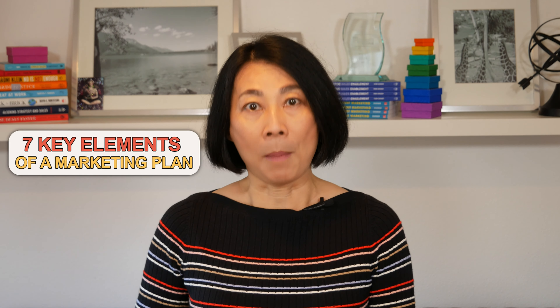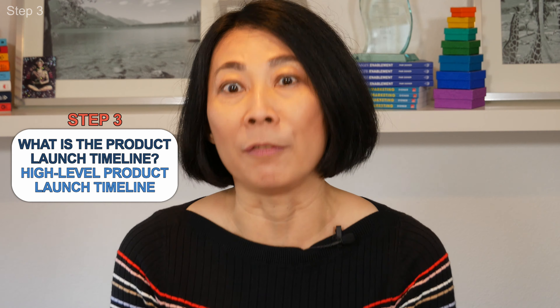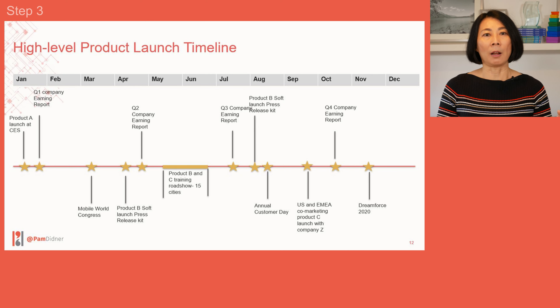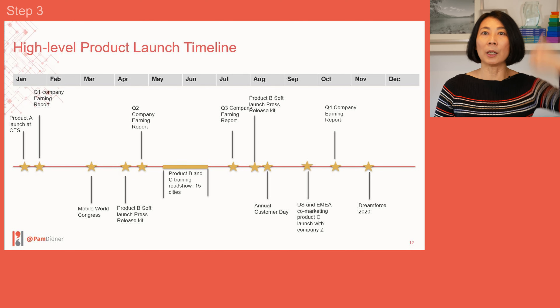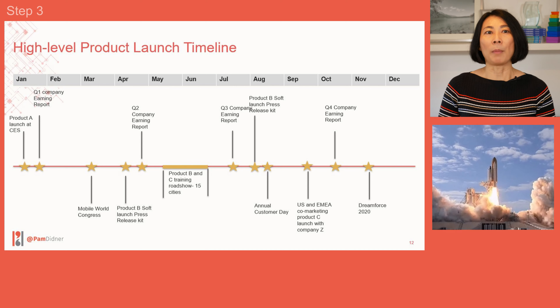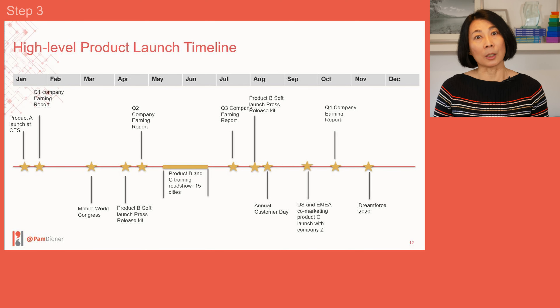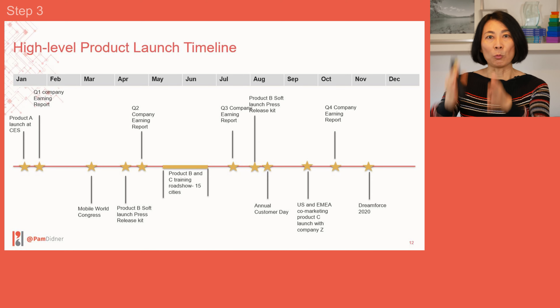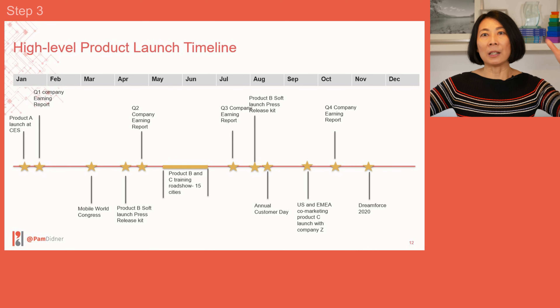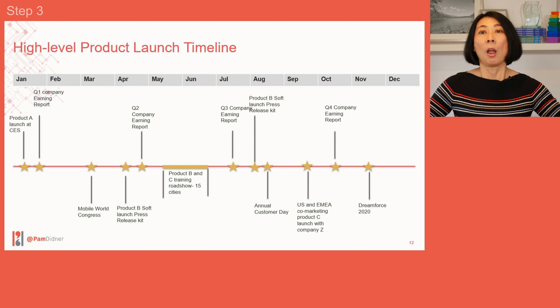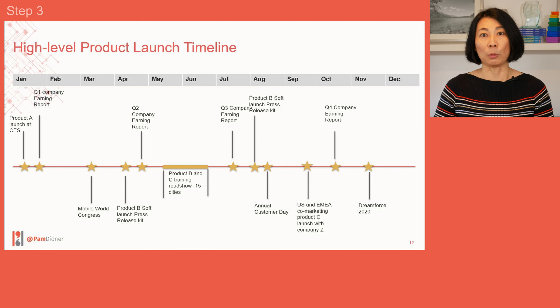Seven key elements of a marketing plan. Number three: do you have any specific product launches or service announcements coming? Can you put that in a very holistic view? It's very important to showcase a summary-level product launch timeline. If you are a big company, chances are you have multiple launches — a tier one launch, then a soft launch, and some might be just PR releases or disclosures. You need to identify what they are and put them in a format covering January to December, showing what key launches management needs to be aware of.